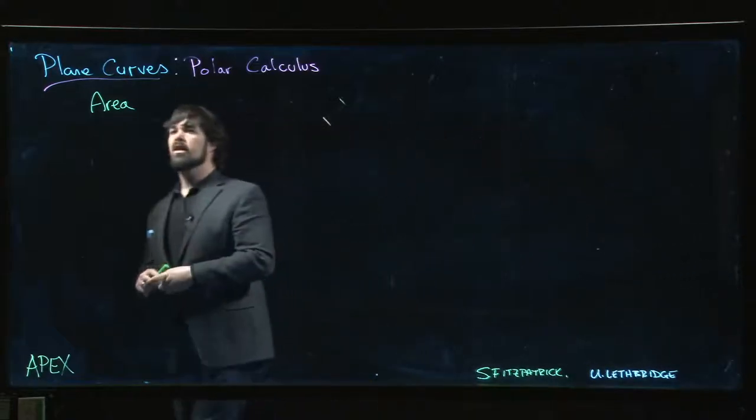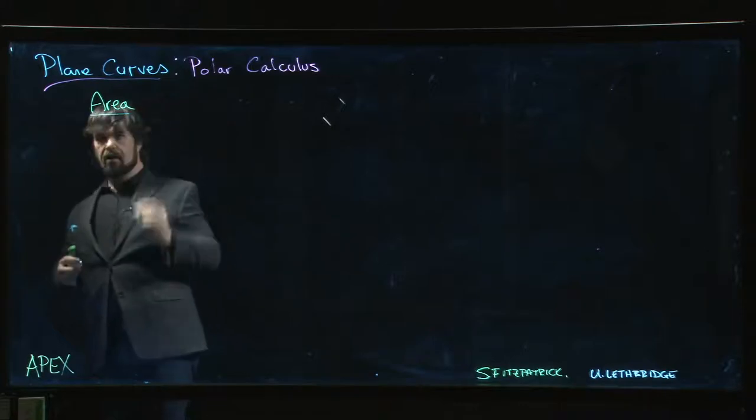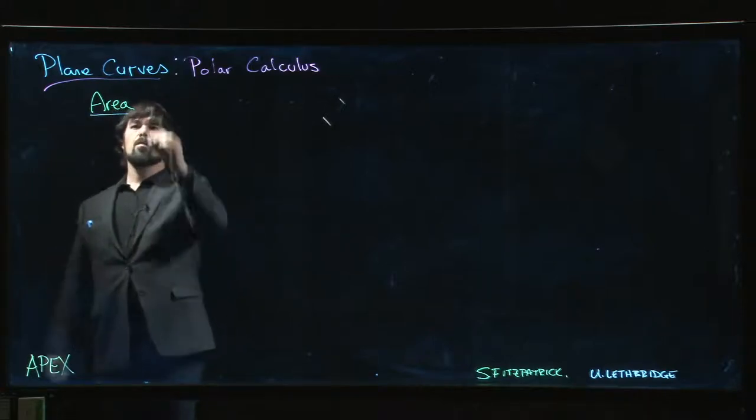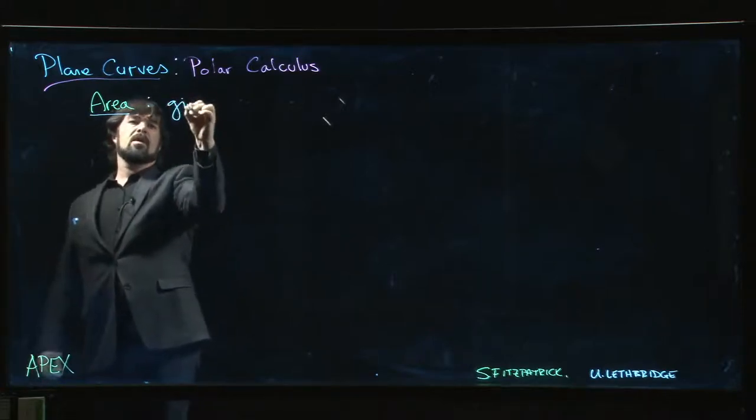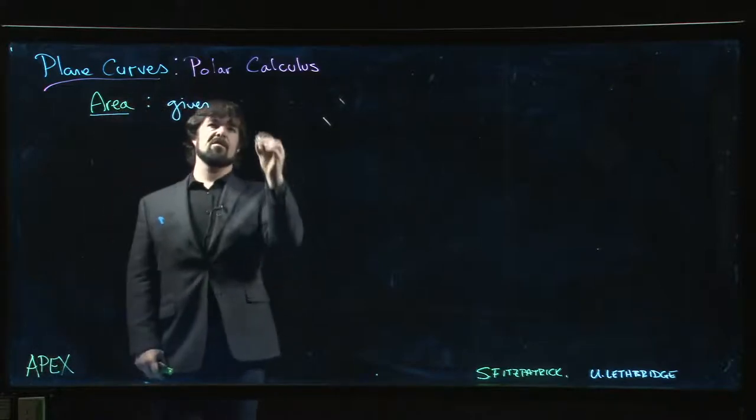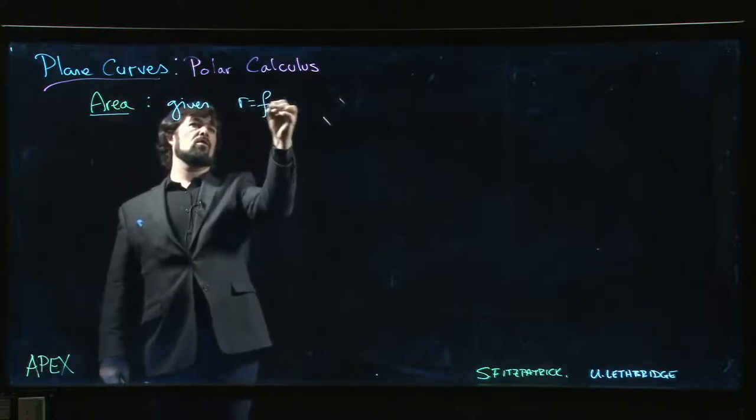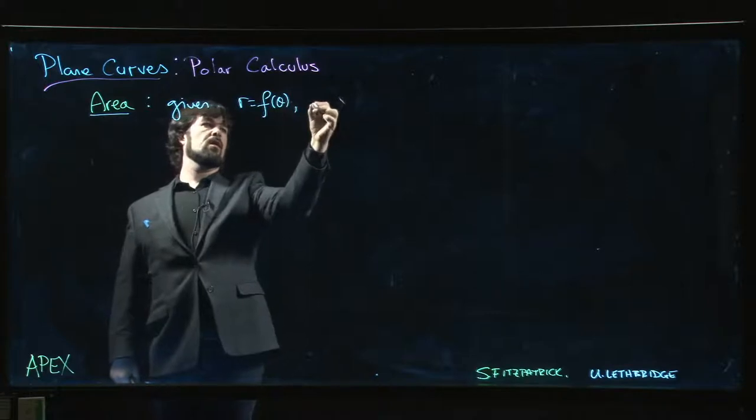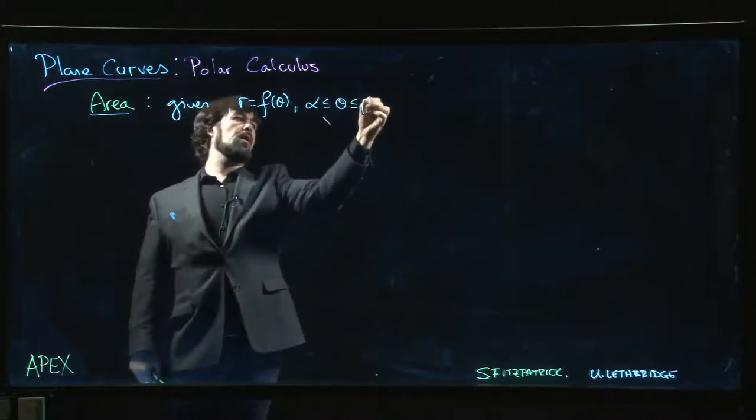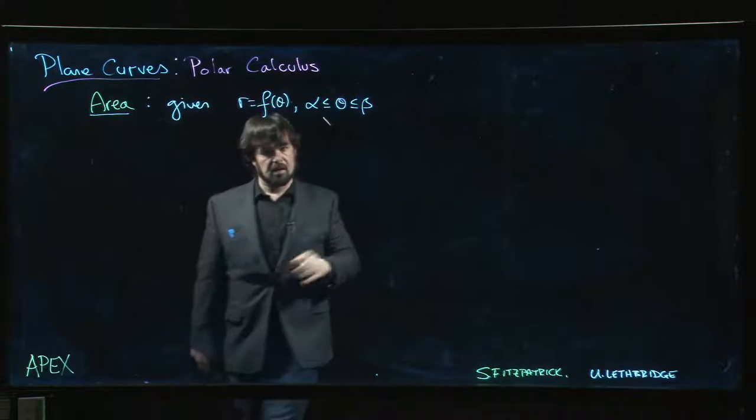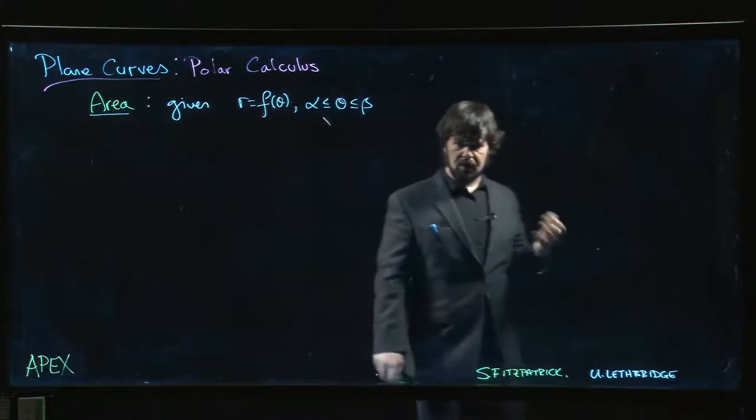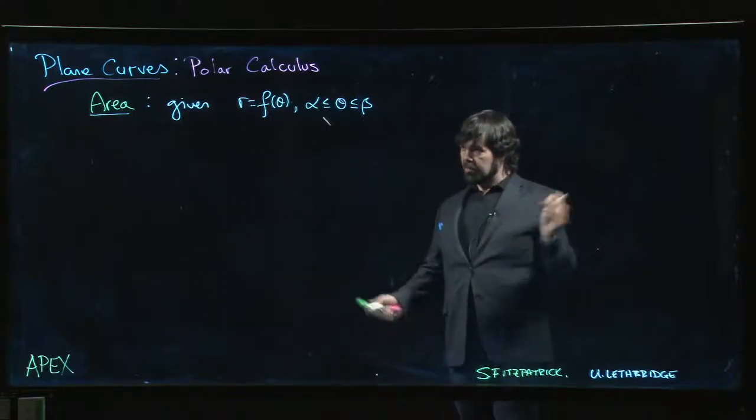So the next problem that we want to look at is area. We'll be given a polar curve, r equals f of theta, and theta is going to be bounded by a couple of angles alpha and beta, often 0 to 2π or 0 to π, something like that, but could be anything.